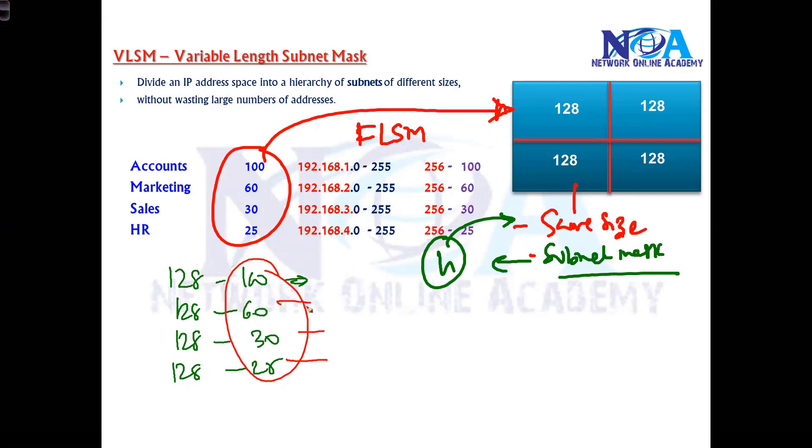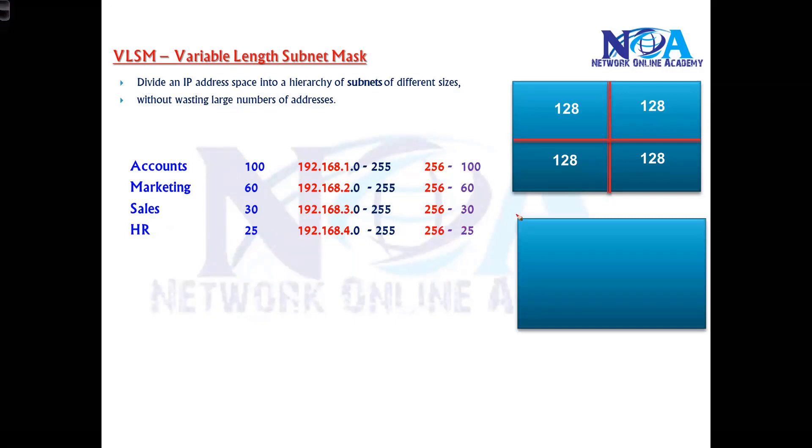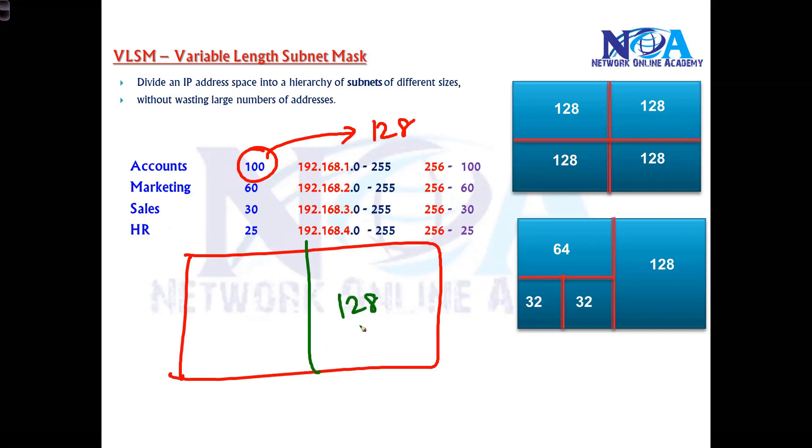In VLSM, we divide into variable sizes. I'll use one network and divide it into parts. For the 100-host requirement, I'll allocate 128 for Accounts department. For the 60-host requirement, instead of 128, I'll go with 64.